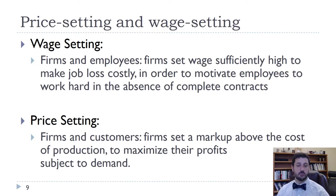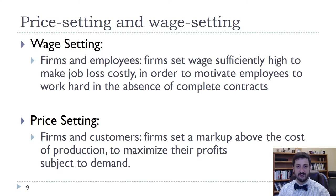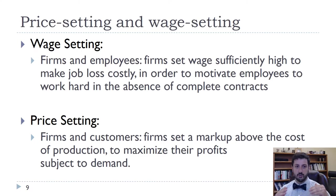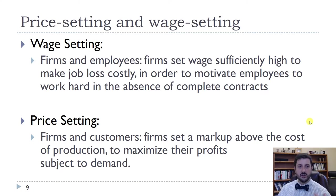On the other hand is the price setting decision, which comes from Chapter 7, where firms are setting some markup above their cost based on how much competition they face and the elasticity of demand they're facing — doing that to maximize profits too. The cost of production comes from the wage setting curve, at least in part, and the price setting decision also comes from the demand curve. It's these two decisions working together that bring us to our labor market equilibrium.